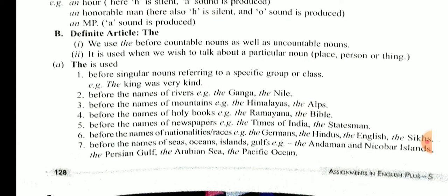Before the name of the newspaper - the Times of India, the Statesman, the Dainik Bhaskar जो आपके घर में आता होगा। Before the name of nationalities और races - the Germans, the Hindus, the English। Nationalities मतलब जो हमारी nationality है, जहाँ से हम belong करते हैं।